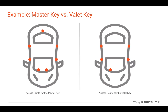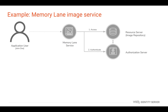Let's take another example. Let's say that you are using an application called MemoryLane to manage your photographs and another application called Facemaker to edit your photographs. The photographs you upload to MemoryLane will be stored in its image repository, which is the resource server, while its authentication and authorization module, known as the authorization server, will grant you access to the photographs stored in its resource server. Similarly, the Facemaker application has two components called authorization server and the resource server.